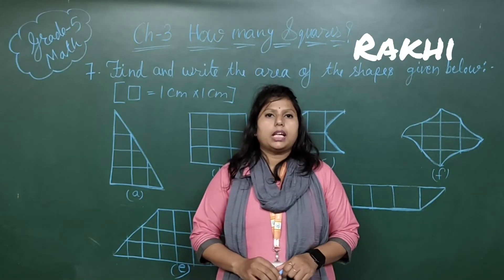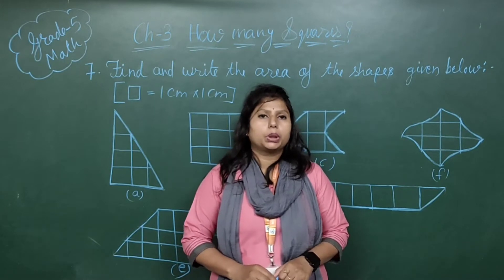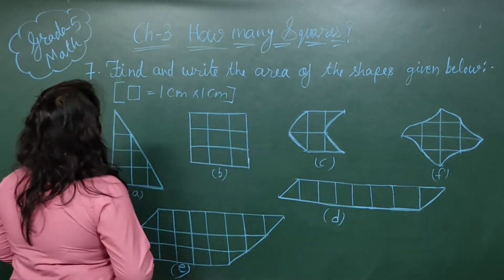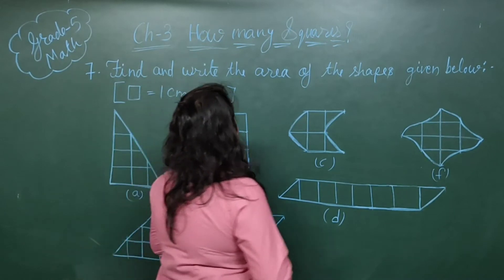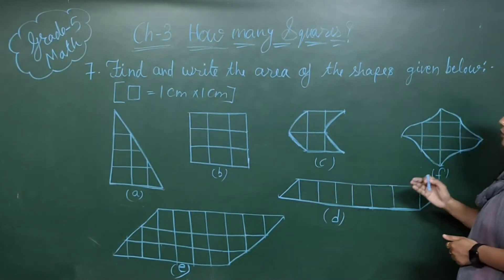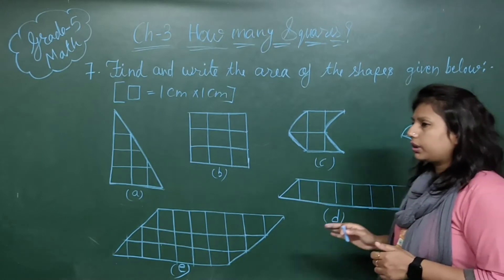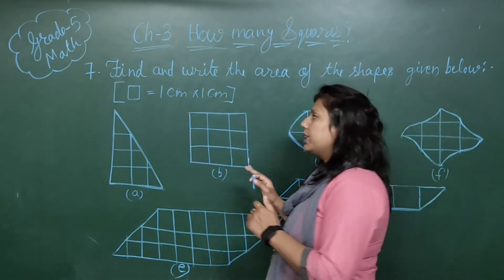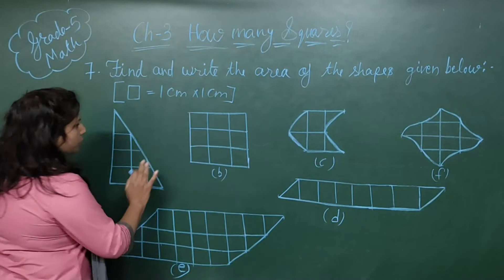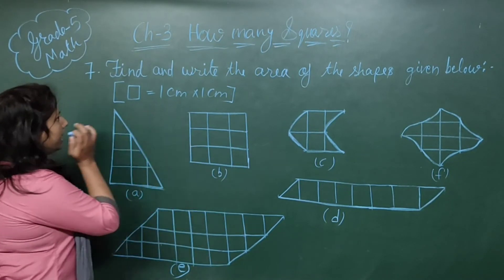Hello everyone. This is our fourth session of chapter number 3, 'How Many Squares?' In your workbook, question number 7 says: find and write the area of the shapes given below. One square sheet is given with some shapes on it, and you have to find the area.